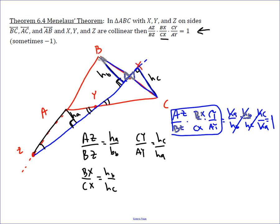So that can be used in both proving three points are collinear, or if they are collinear, then that tells us something about some ratios in that triangle.